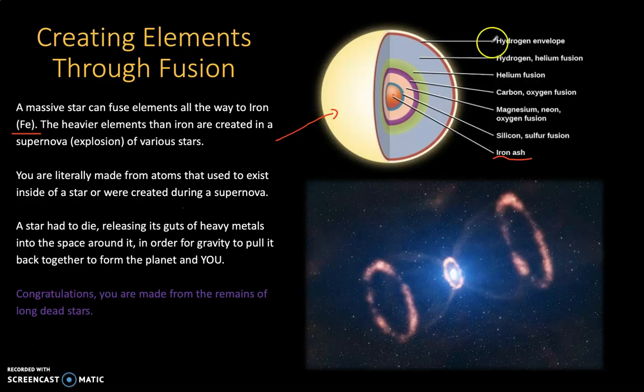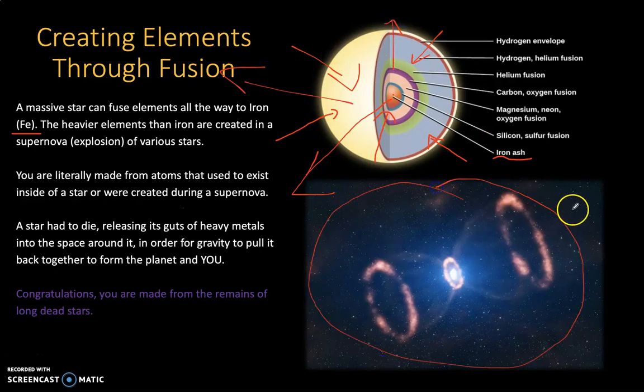And eventually the star runs out of elements to fuse together. The pressure and temperature is not high enough for the star to fuse elements heavier than iron. And so because the star has run out of nuclear fuel, it collapses inwards as the force of gravity overtakes that force of fusion. And it crushes the star in towards that iron core.